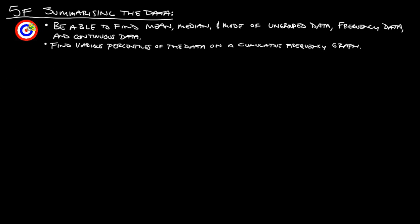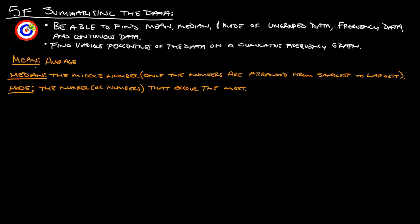Alright, so let's start off with a quick review of mean, median, and mode. Mean is just the average of all the numbers, or all the data. Median is the middle number, once all the numbers are arranged from smallest to largest. And then the mode is simply the number or numbers that occur the most often.